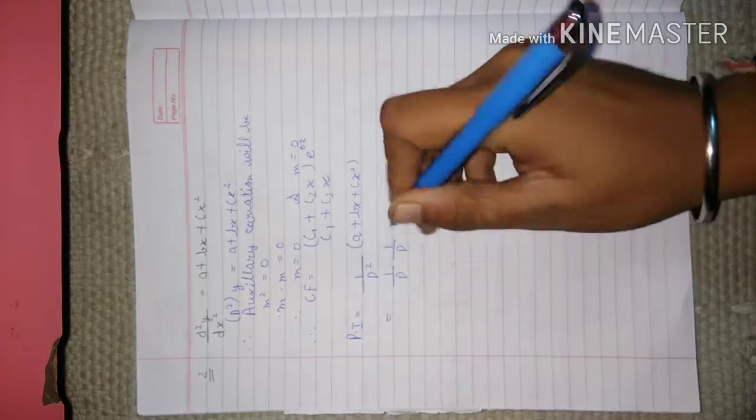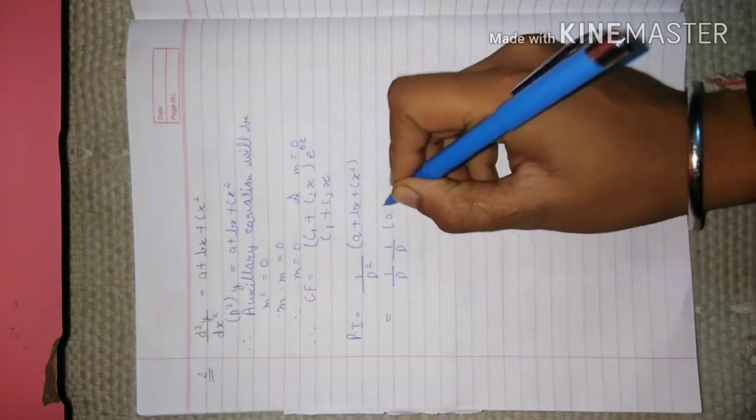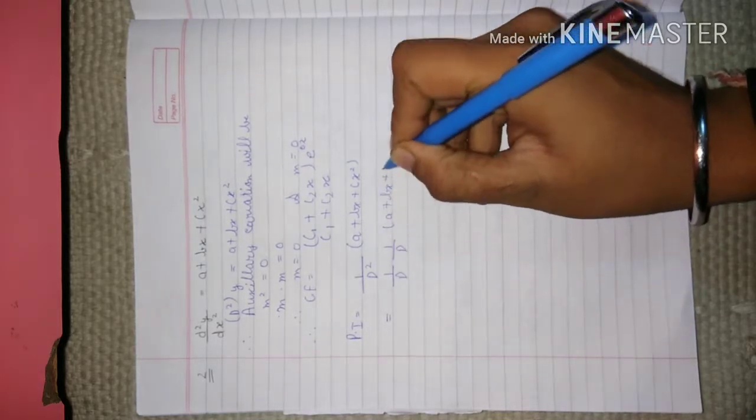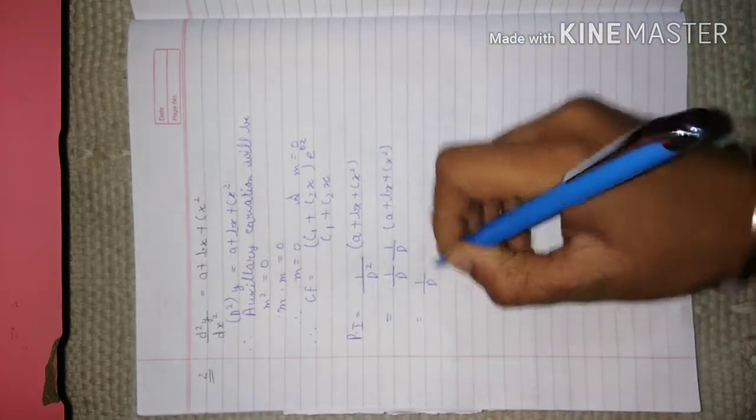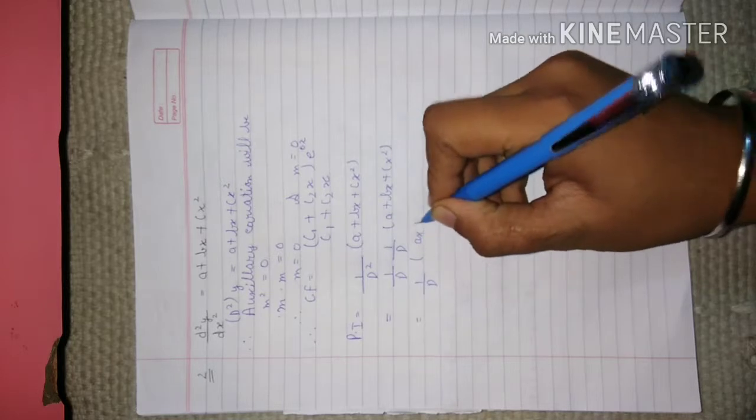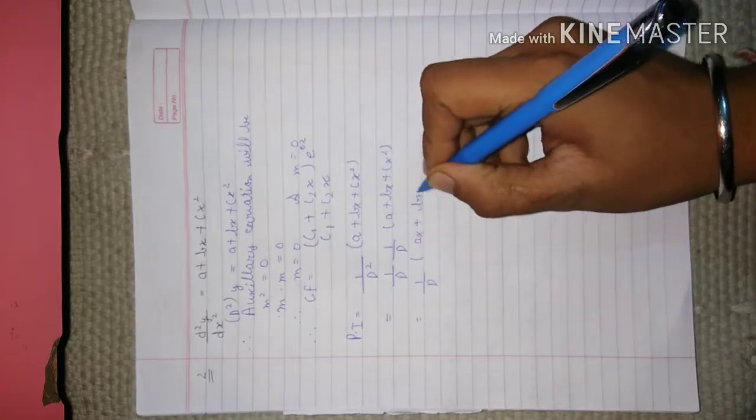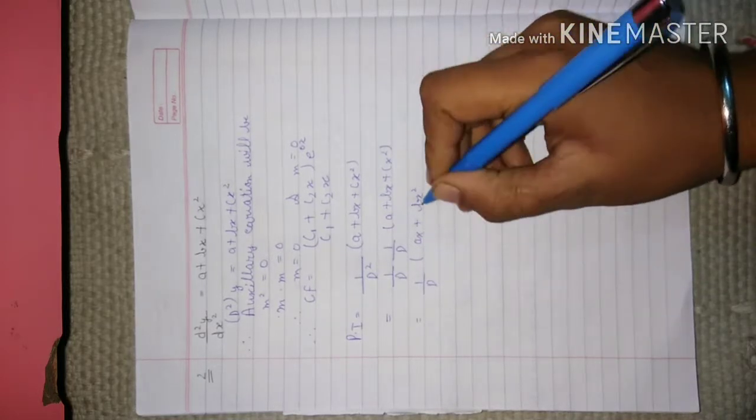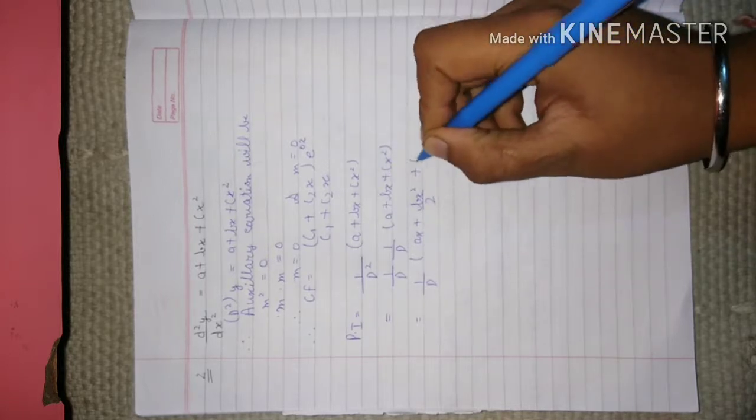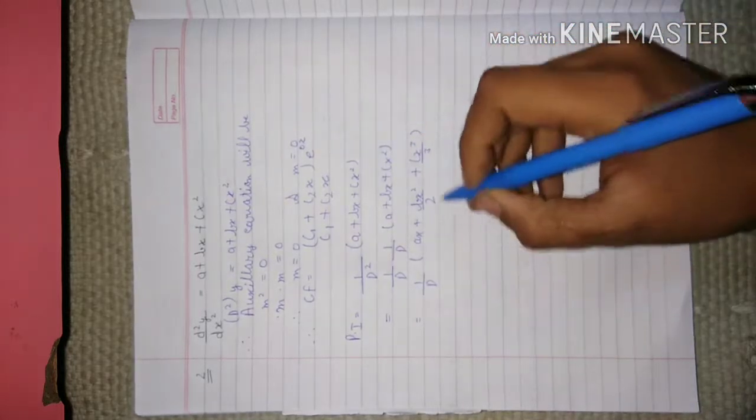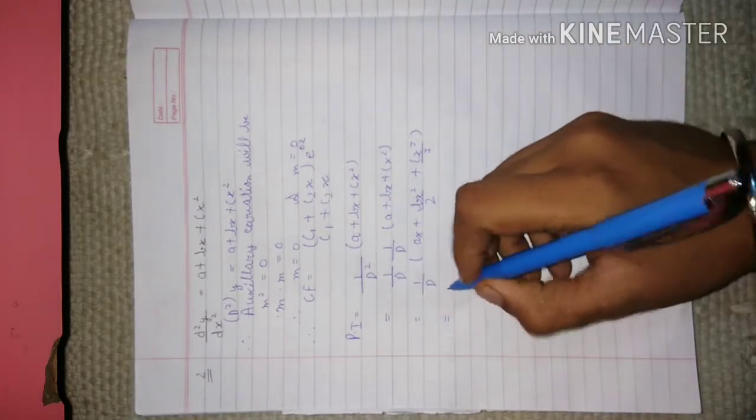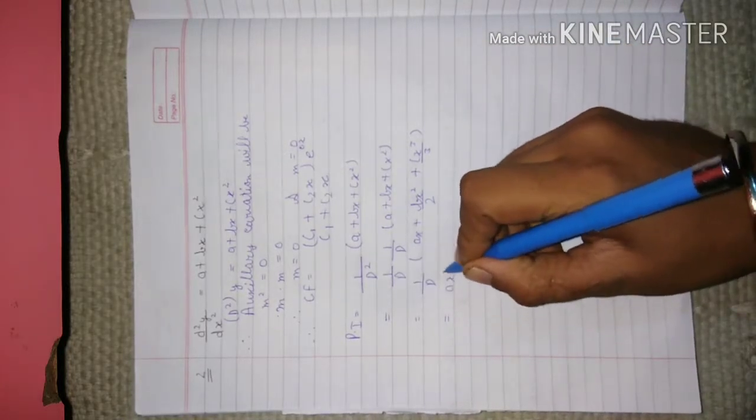We can write it as a + bx + cx². You can write it as a + bx.